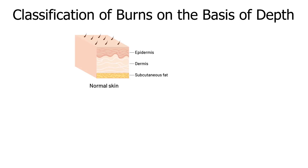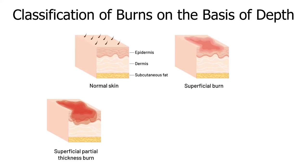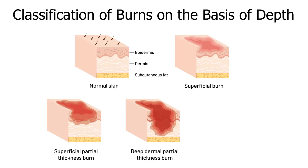The thickness classification of burn injury is often used to define the extent of burn injury depth. Superficial burns involve only the epidermis. Superficial partial thickness burns involve the epidermis and only the papillary or upper dermis. Deep dermal partial thickness burns involve the epidermis and dermis to the reticular dermis, containing blood vessels, hair follicles, and oil and sweat glands.